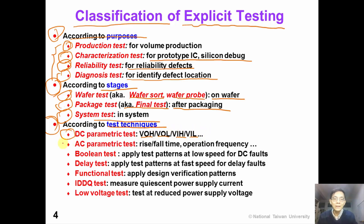On the other hand, AC parametric tests measure the speed-dependent characteristics, such as rise time, fall time, and operation frequency of the ICs. Boolean tests apply test patterns at low speed to detect DC faults which are not frequency dependent. On the other hand, delay tests apply test patterns at fast speed to detect delay faults, which are test-speed dependent.